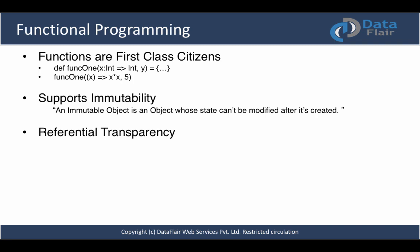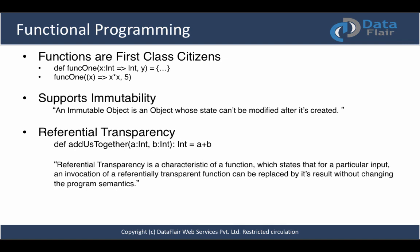Let's understand referential transparency with a simple example. Suppose you have this function: `def addUsTogether` — that's the Scala way of writing a function. We use the `def` keyword to define a function, then the function name, arguments list, and return type. In our case we take two arguments, `a` and `b`, both of integer type, returning an integer. This function performs an add operation and returns the result. If you look closely, this function does not affect any other parts of the program, supporting the concept of referential transparency.